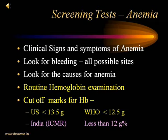Let us think that we have a patient of anemia in our clinic. What are the basic screening examinations we need to do before proceeding with higher investigations? Clinical signs and symptoms of anemia have to be looked for. We have to search, interrogate, and look for bleeding from all possible sites — like a bleeding duodenal ulcer, epistaxis, hemorrhoids, menorrhagia, familial bleeding disorders, and so forth. We must also try to look for causes of anemia evident on clinical examination.